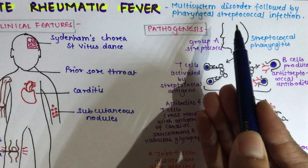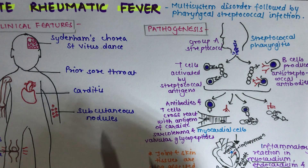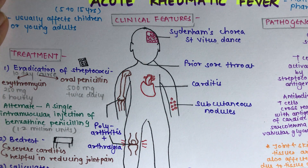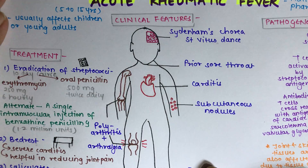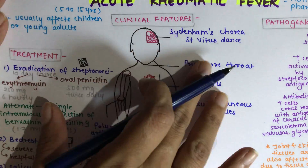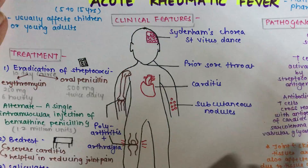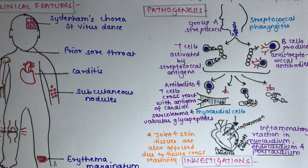Acute rheumatic fever is followed by pharyngeal streptococcal infection. It usually affects children aged 5 to 15 years or young adults. It is less commonly seen in developed countries but remains prevalent in developing countries. That covers the introduction to acute rheumatic fever.